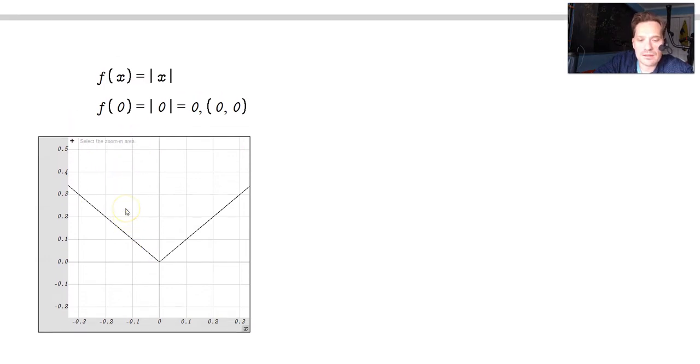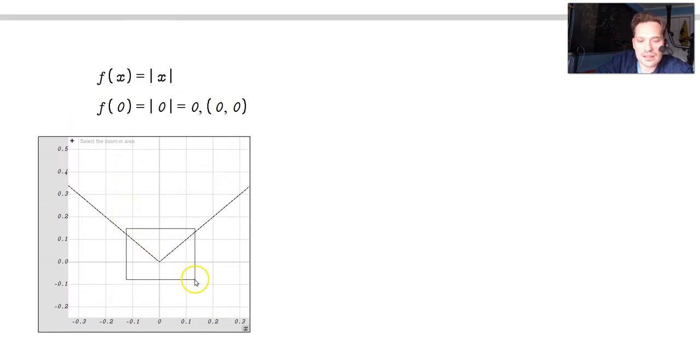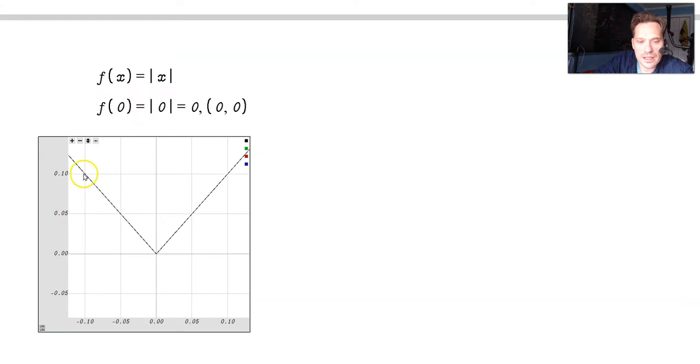Let me zoom in to a very fine level of detail. Now look carefully here. You're going to go down 0.1 and then over 0.1, so that slope is negative 1. Here it's 0.1 to the right, 0.1 up. That means it's a slope of 1.